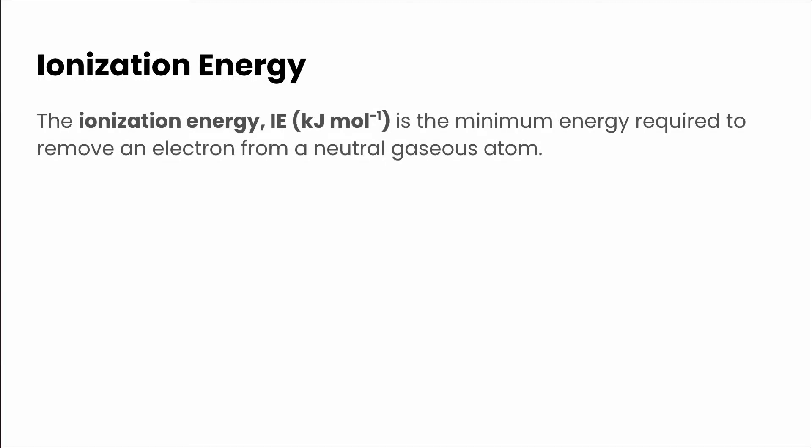In this video, we're going to take a look at periodic trends in ionization energy, electron affinity, electronegativity, and metallic character. Let's start out with a definition for ionization energy. This is defined as the minimum energy required to remove an electron from a neutral gaseous atom. If we were to write this as an equation, we would say x, which is our neutral gaseous atom, reacts to give an x plus because we've removed an electron, plus an electron.